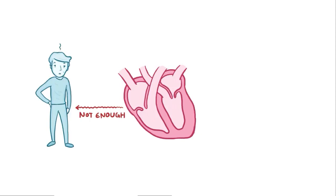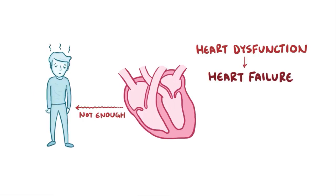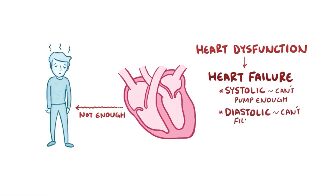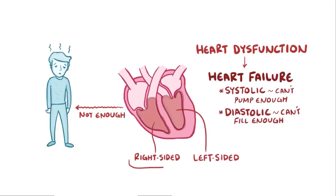When the heart can't pump enough blood to meet the body's demands, it's initially called heart dysfunction and can worsen to a point where it's called heart failure. This can happen in two ways—either systolic heart failure, where the ventricles can't pump blood hard enough during systole, or diastolic heart failure, where not enough blood fills the ventricles during diastole. Heart failure can affect the right ventricle, the left ventricle, or both ventricles, so someone might have right-sided heart failure, left-sided heart failure, or both, which is called biventricular heart failure.